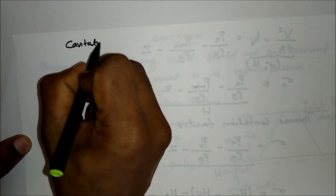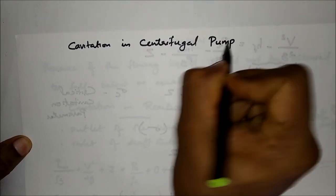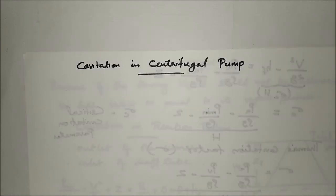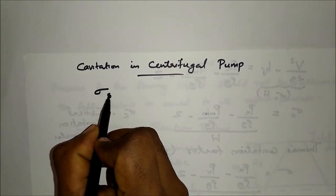Cavitation in centrifugal pumps: in the case of centrifugal pumps, cavitation may occur at the inlet of the impeller or at the suction side of the pump, where the pressure is considerably low. Due to cavitation there will be a sudden drop in efficiency and head. In order to determine whether cavitation will occur in any portion of the suction side of the pump, the critical value of the Thomas cavitation factor is calculated.